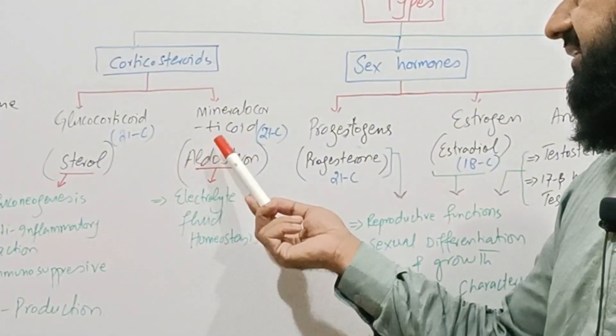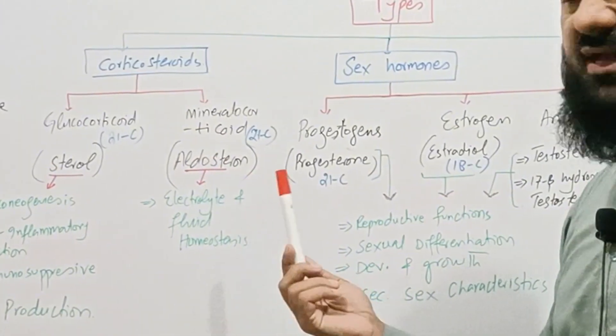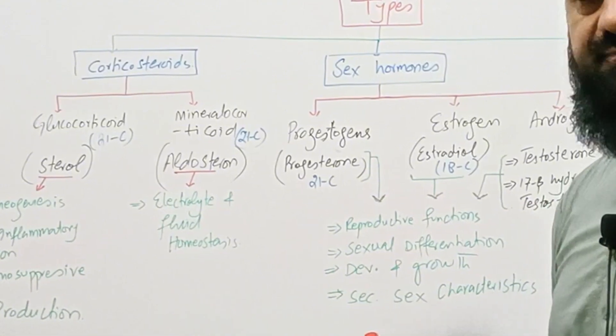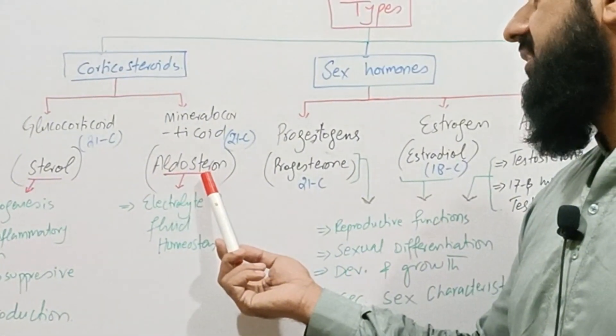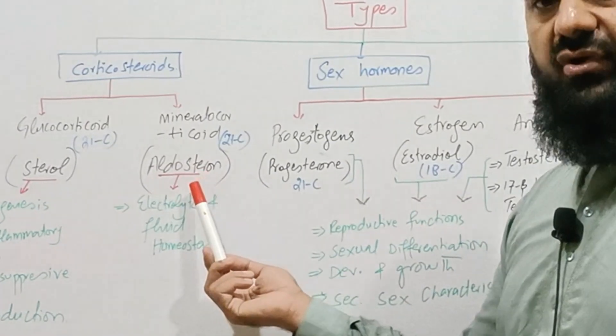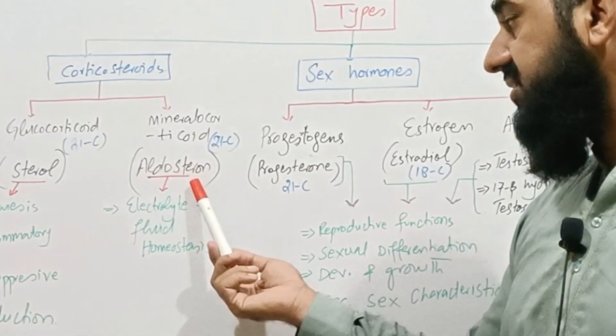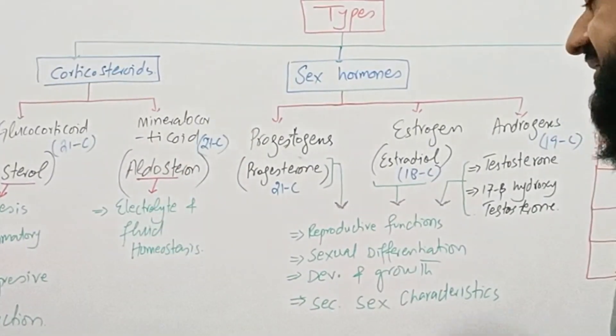Mineralocorticoids, and the example of this steroid is aldosterone. Remember I am discussing naturally occurring steroids. Aldosterone acts on tubules of the nephron to prevent water and mineral loss, so it is involved in electrolyte and fluid homeostasis.